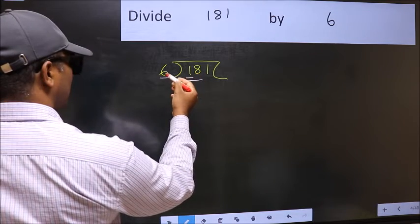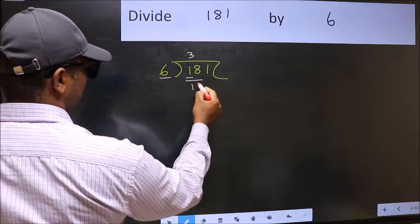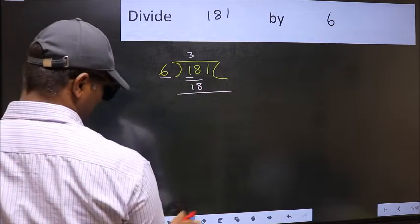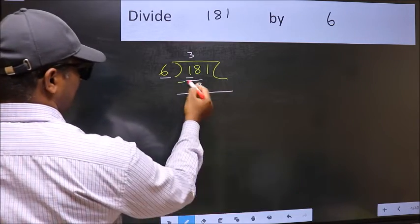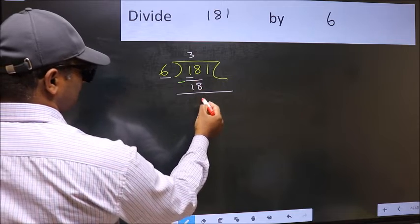When do we get 18 in 6 table? 6 threes, 18. Now you should subtract. 18 minus 18, 0.